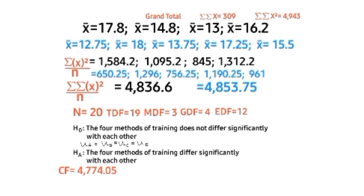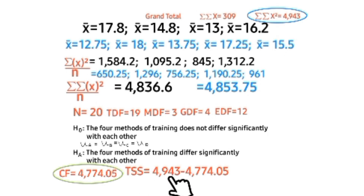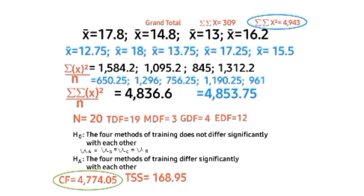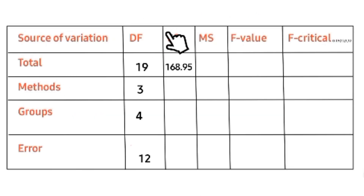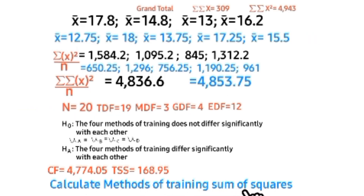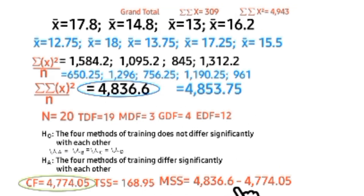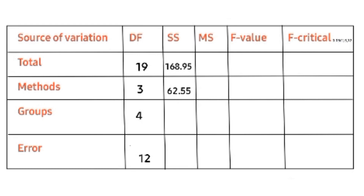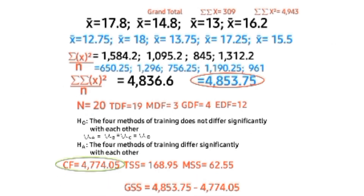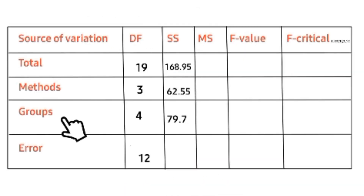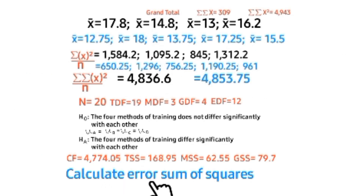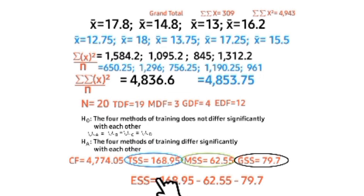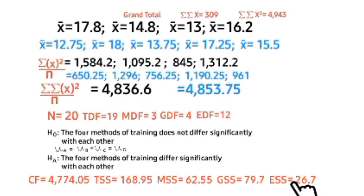Calculate the correction factor (CF): CF equals the square of the grand total divided by N, giving that value. Calculate the total sum of squares: total SS equals the grand total of squared values minus the correction factor. Record this in the ANOVA summary table. Calculate the group sum of squares: group SS equals its grand total value minus the correction factor. Calculate the error sum of squares: error SS equals total SS minus methods SS minus group SS.